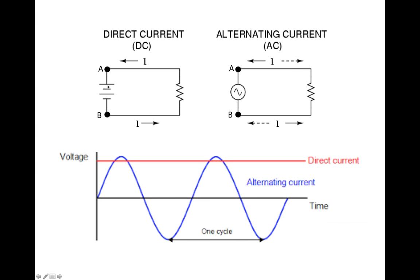In an AC circuit, the voltage follows a sinusoidal pattern — it's like a sine wave. The voltage is positive only half of the time and negative the other half. If positive voltage means the voltage at point A is higher than at point B, then negative voltage simply means the voltage at point B is higher than at point A. So about half of the time, voltage at A is higher, and the other half it's the other way around — that's called alternating current.